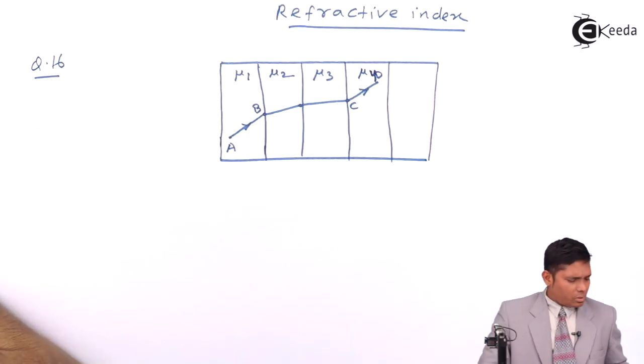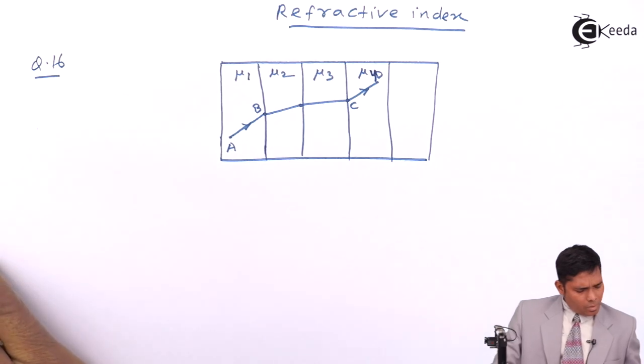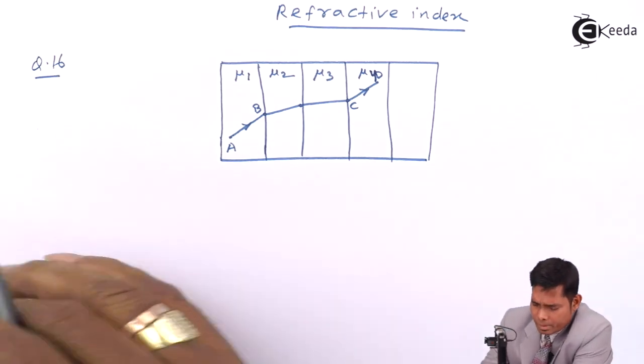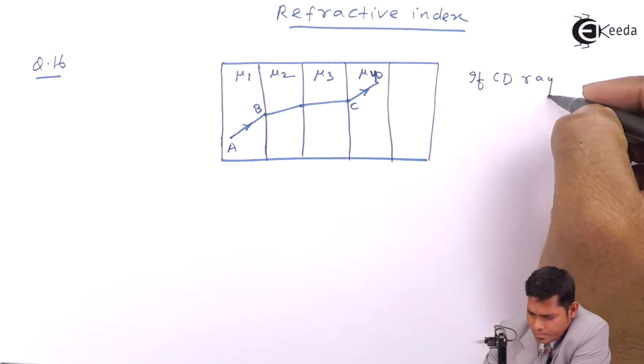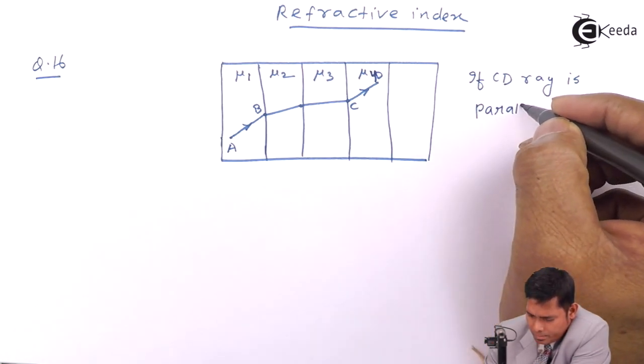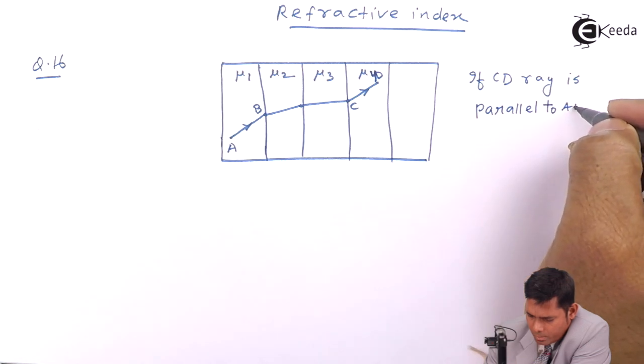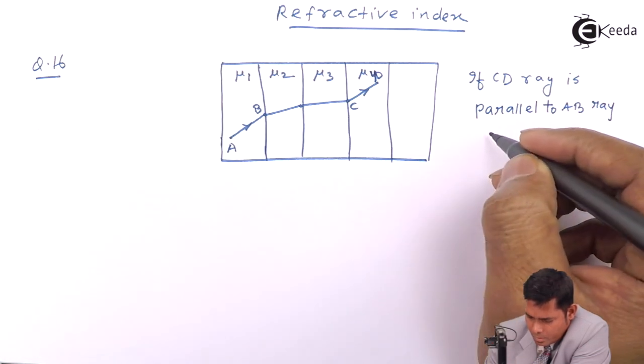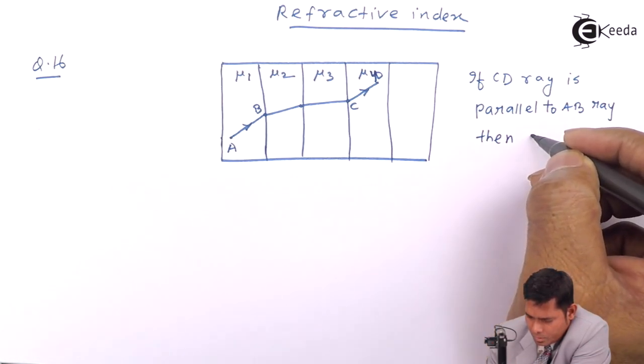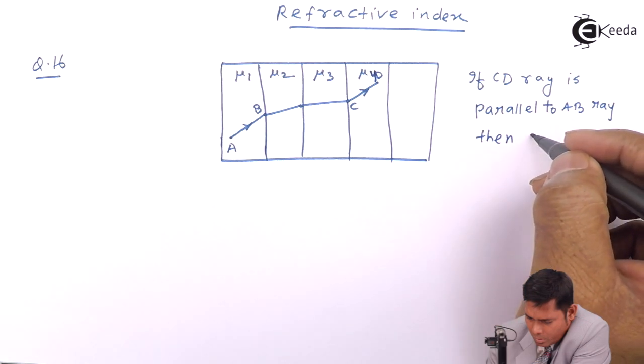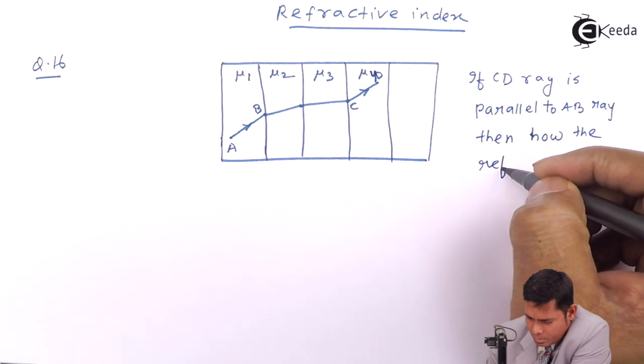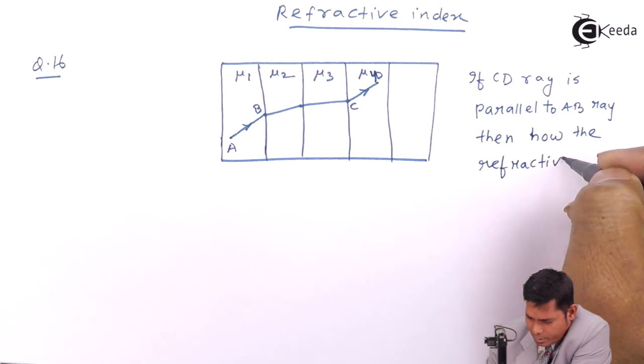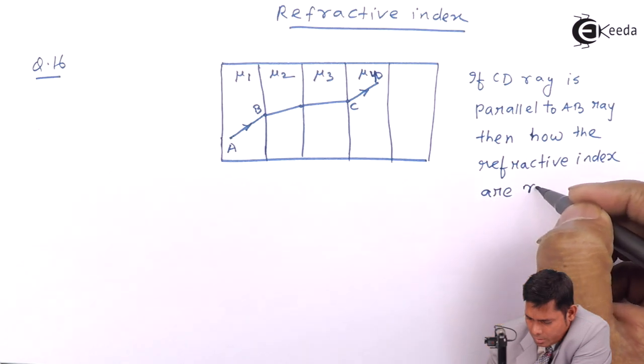The question is, if the ray emerges here, if C, D ray is parallel to A, B, then how the refractive index are related.